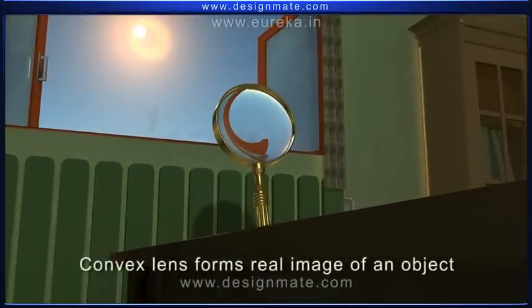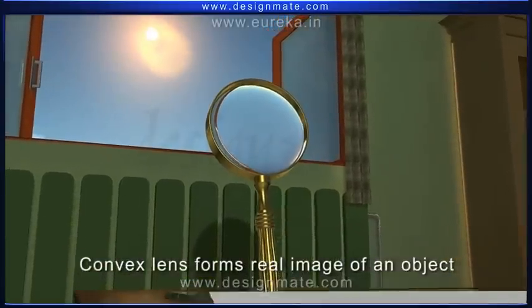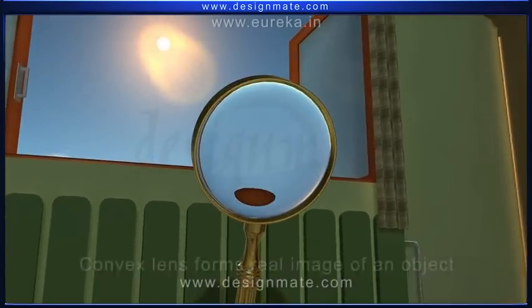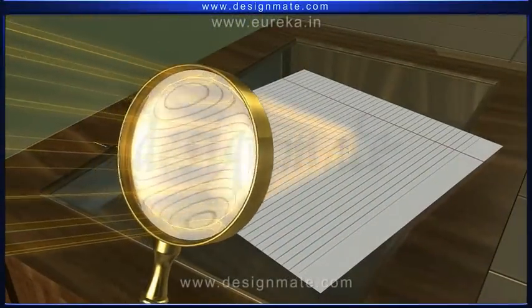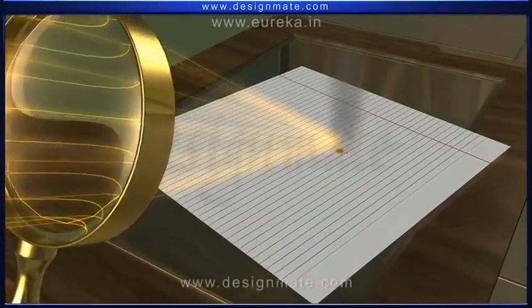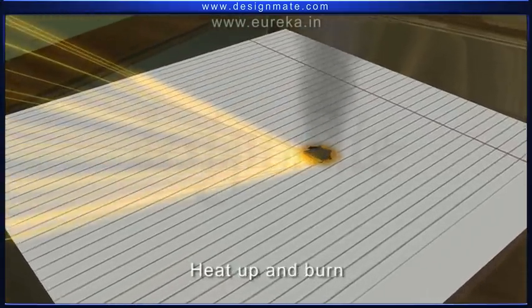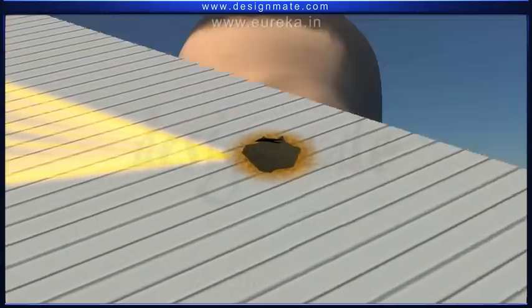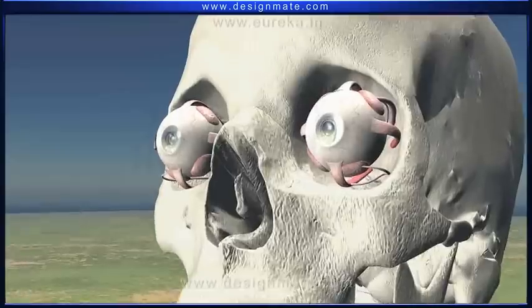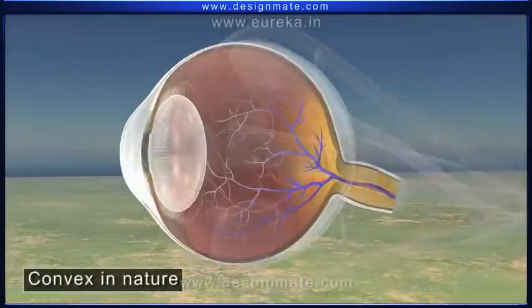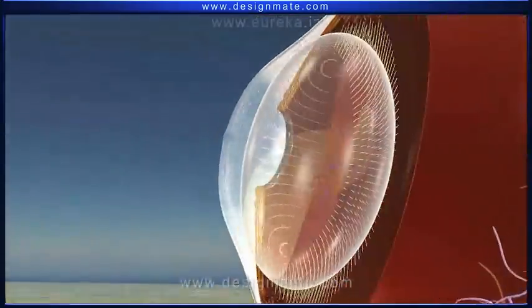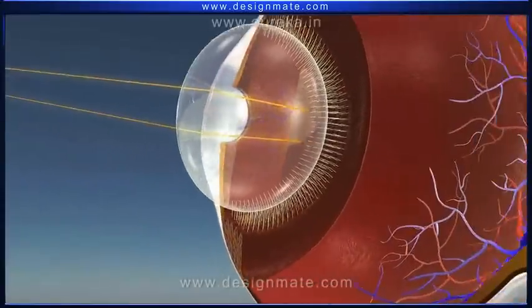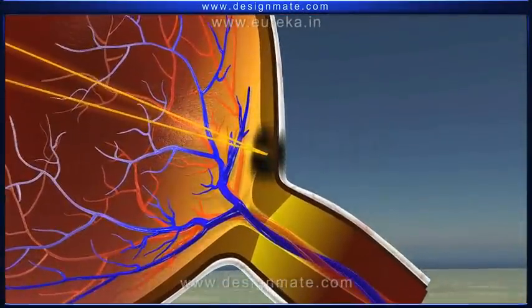The image formed by the convex lens in this case is a real image of an object. The convex lens can focus the light from the sun to a point on the other side of the lens. The concentration of light energy at this point causes the paper to heat up and burn. The lens in a human eye is convex in nature. We should not look at the sun directly, as it can damage our eyes permanently.